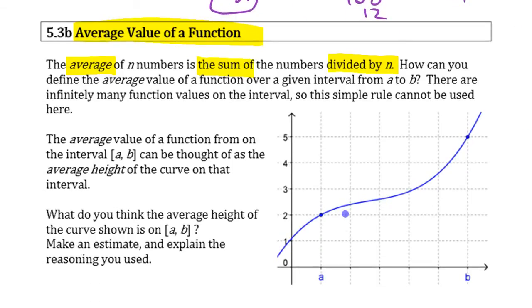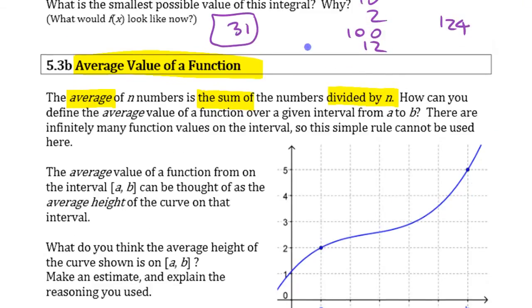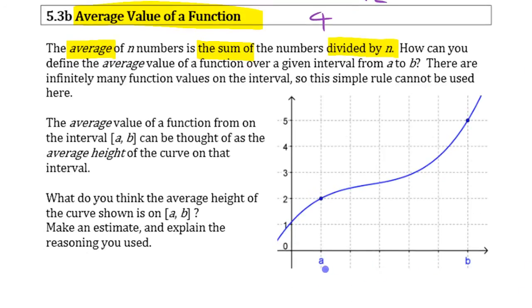The problem here is that we want to know what the average value of this function is, but we don't have a discrete number. Here we have four people, individual people. Here you don't have a certain number of numbers. You have an infinite number of numbers in between there and there. So it's hard to say how do you equally distribute all of that value.